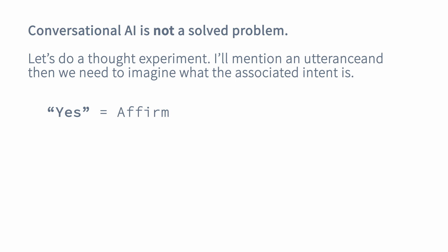This time the user says 'no.' Again, this is a relatively easy one. No is a clear example of a user indicating that they want to deny something in a conversation. We've got a relatively simple conversational building block here. There may also be other utterances that can be used to deny something, but no is a really clear example belonging to a single intent.